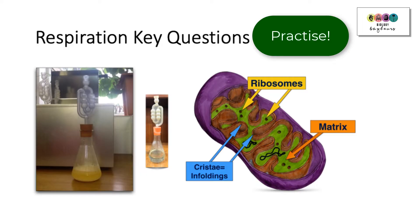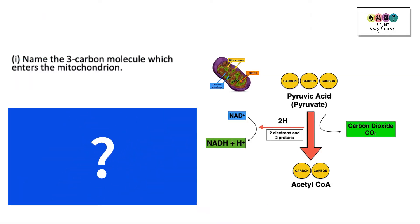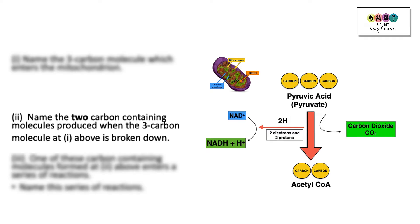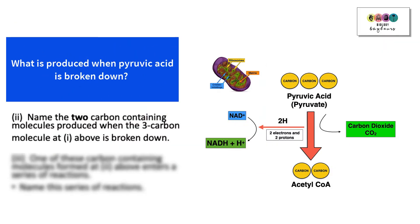First question: Name the three carbon molecule which enters the mitochondrion. This is at the end of glycolysis. What enters the mitochondrion? It's pyruvic acid. Part two: Name the two carbon containing molecules produced when the three carbon molecule above is broken down. In other words, what's produced when pyruvic acid is broken down? The answer is acetyl-CoA, that two carbon molecule.